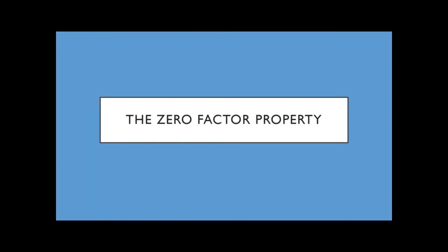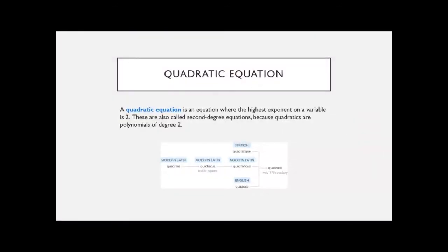So, zero-factor property. This is the basis of what we use to solve quadratic equations, and if you have to go on to college algebra, you'll be using this a lot. A quadratic equation is any equation where the highest exponent on a variable is 2. That's how you can identify if it's quadratic or not. They're called second-degree equations because the degree of the polynomial is 2.